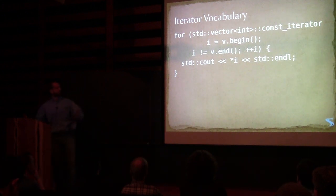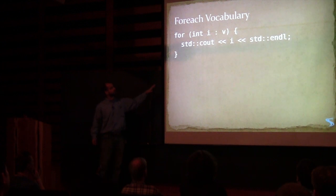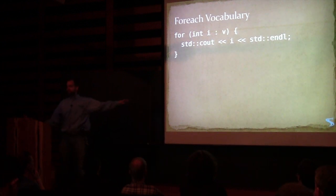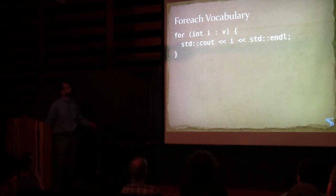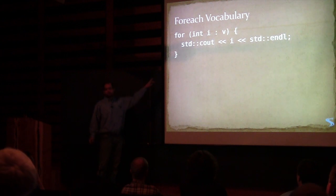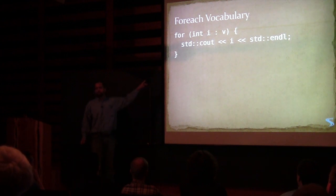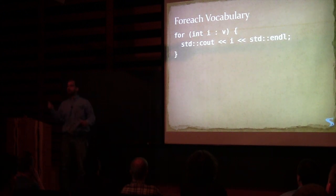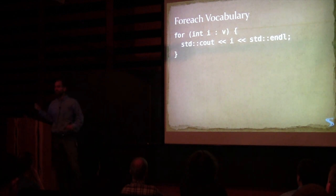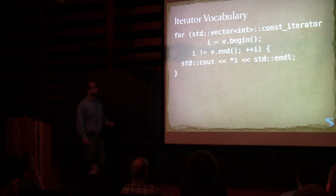We've seen a transition in our vocabulary for doing this kind of thing. Now we have this range-based syntax. Semantically this is the same as a previous slide — we're taking iterators from the beginning and end, we have the contiguous place in memory, and we move those pointers. But I don't think people think about that when they see this code. I argue that when people see this code, they think about something like a bag full of stuff — you take one out, do something with it, put it back in, and grab the next thing.